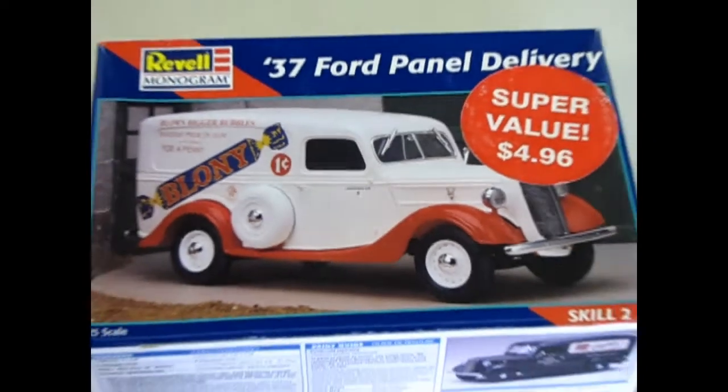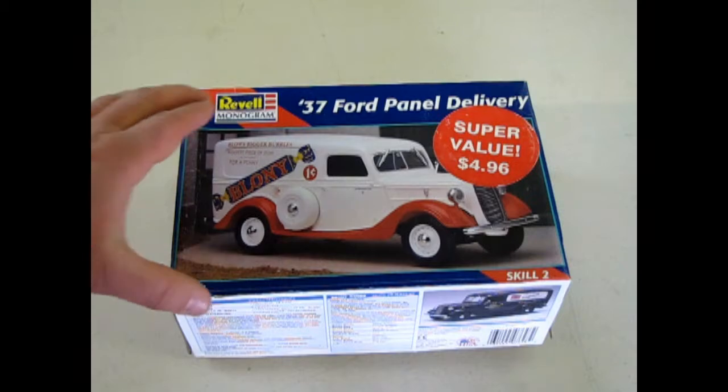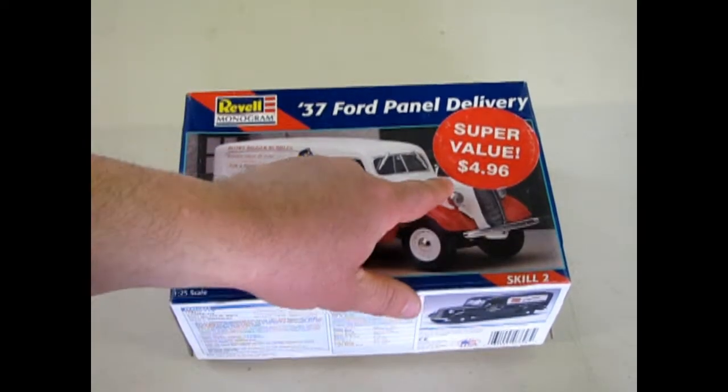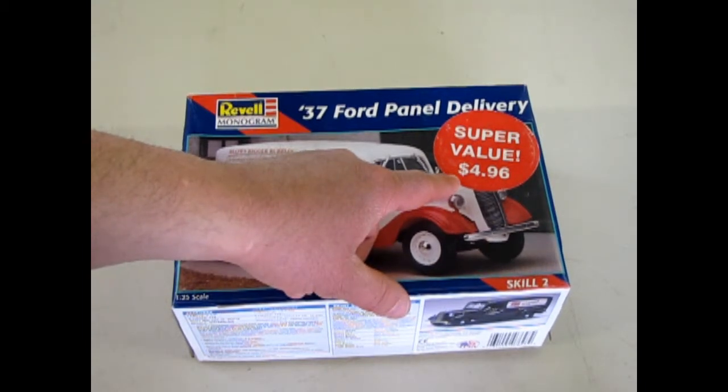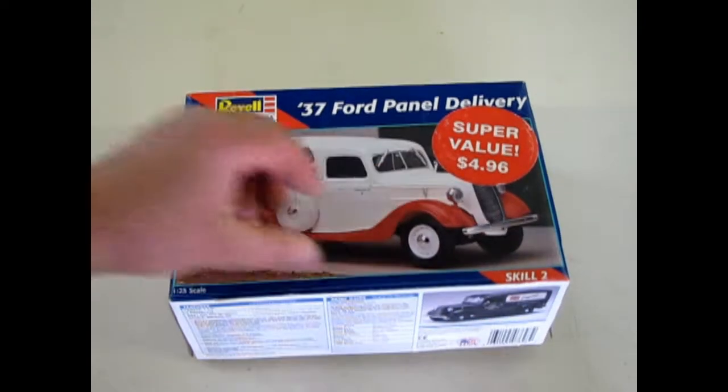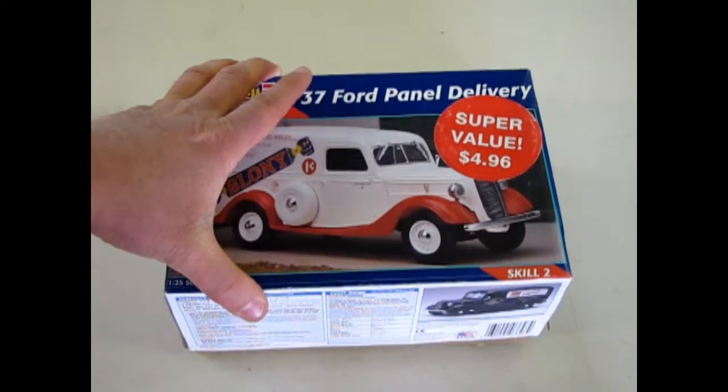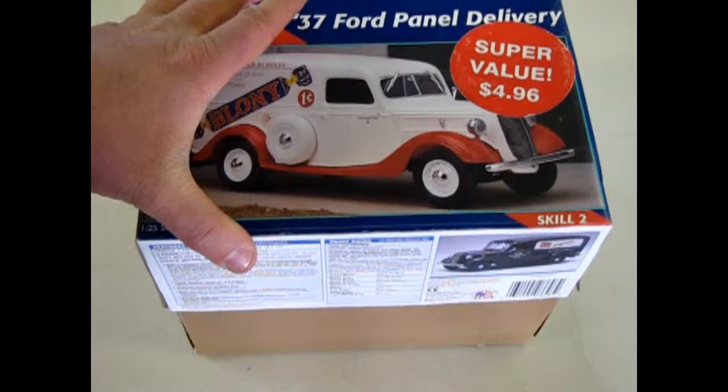Special delivery, special delivery. 1937 Ford panel delivery van from Revell Monogram. This kit originally came out in 1997. It wasn't really the most popular seller and people ended up marking it down. That's why this says super value $4.96. Unfortunately this is a really beautiful kit and it has had a few re-releases from Revell Monogram. So let's just check out the original.